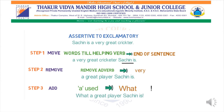Step three: since 'a' is present, we start with 'what.' So the converted sentence is: 'What a great player Sachin is!' I hope this concept is clear for you all. I am trying to make it very simple, and I hope this trick is very helpful for you all. I hope you all understood this three-step trick that you will use to convert any assertive sentence into an exclamatory sentence.